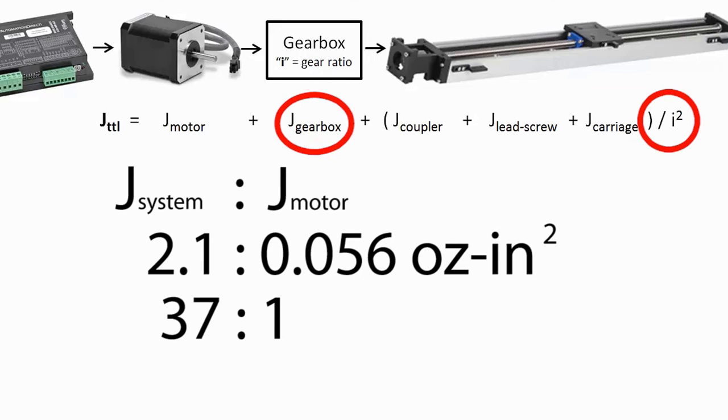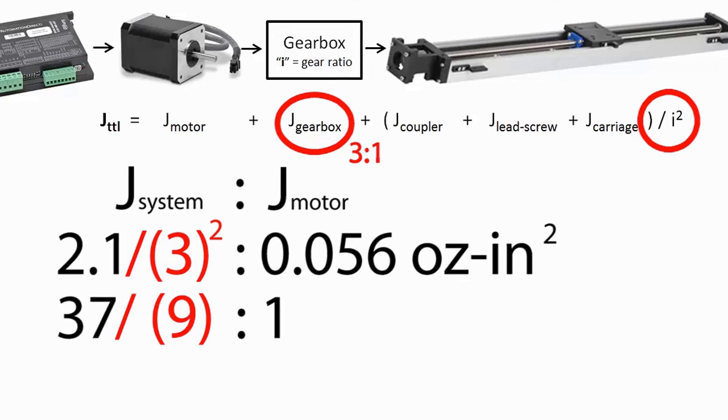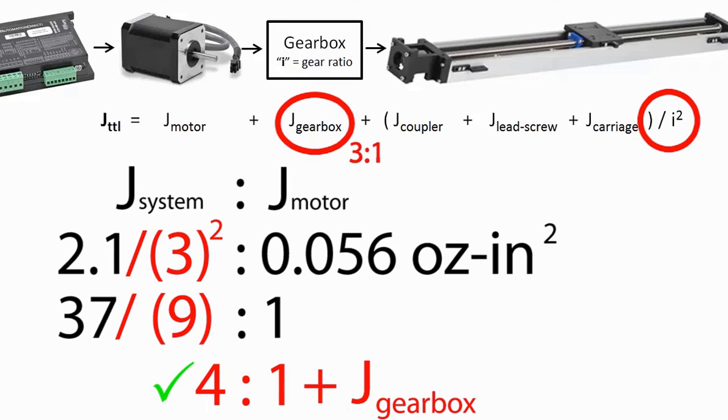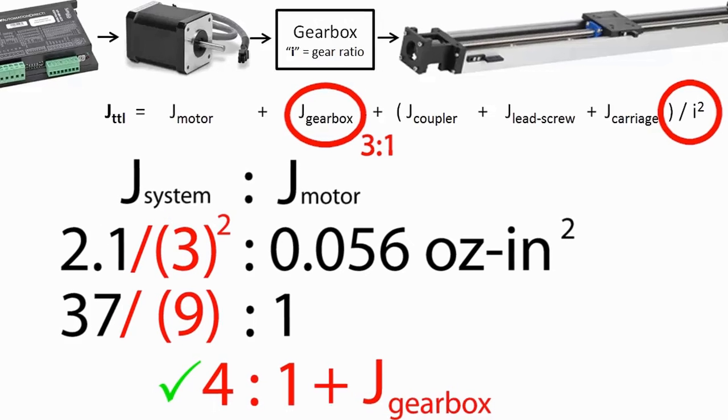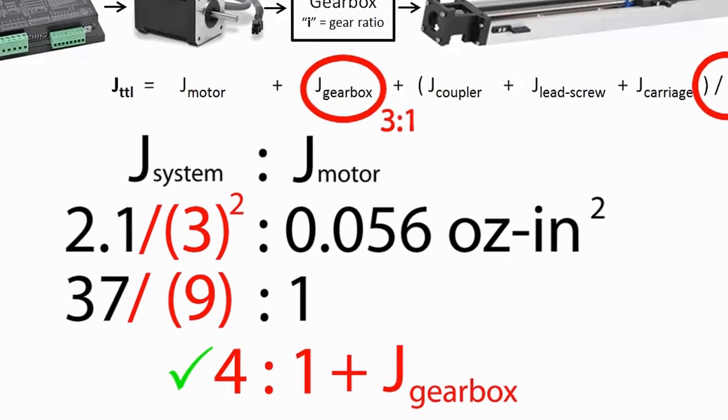if we take our system, but add in a 3 to 1 gearbox or a belt and pulley system, the inertia behind the gearbox gets divided by 9 which brings it down to an acceptable mismatch level that will allow the motor to perform. Of course, you still have to add in the inertia of the gearbox. That's why we call it reflected inertia. It's the modified inertia sent to, or reflected to, the motor after gearing.